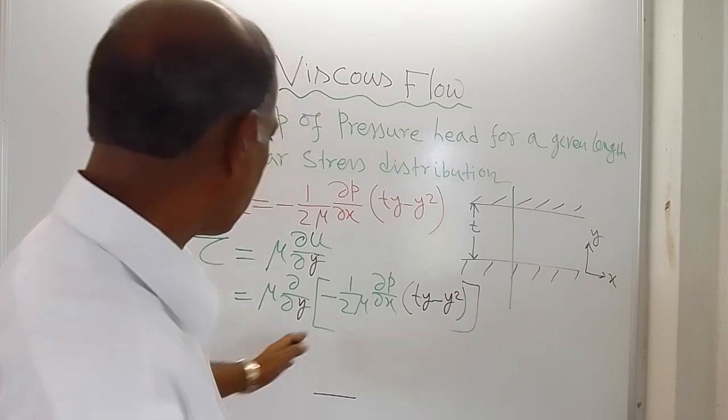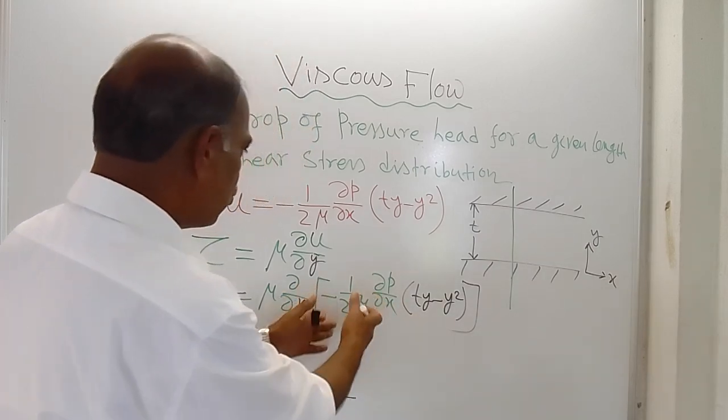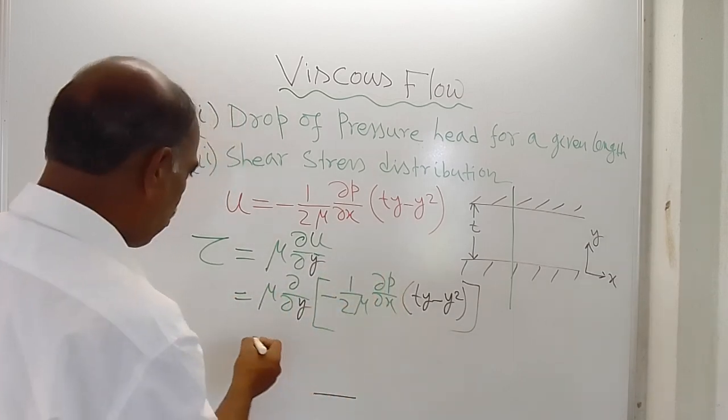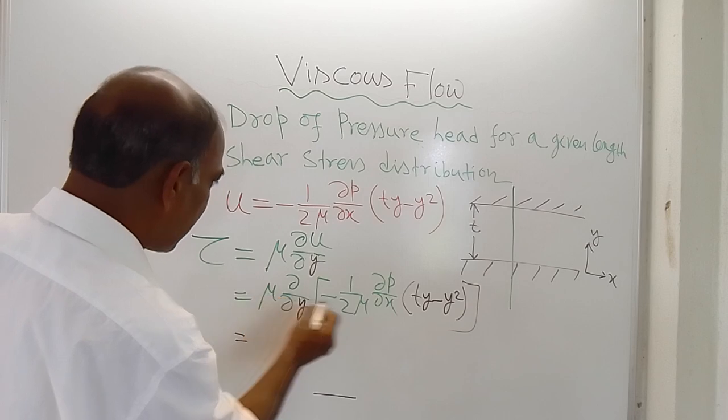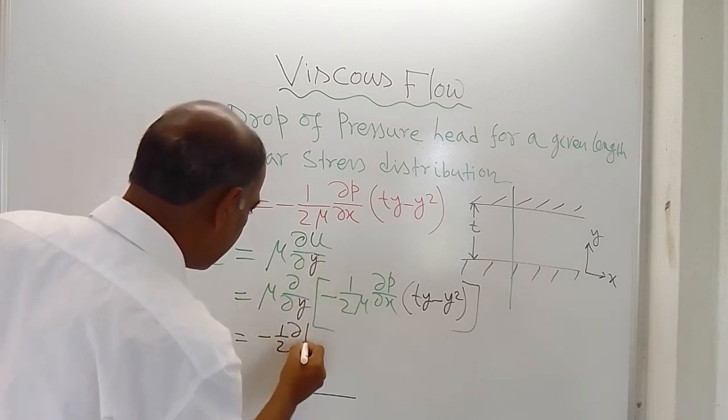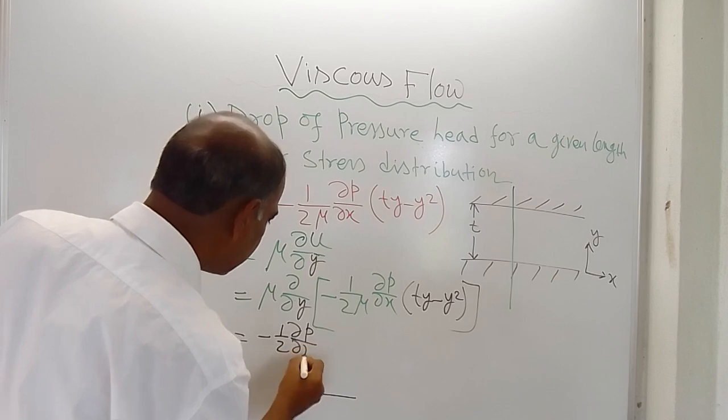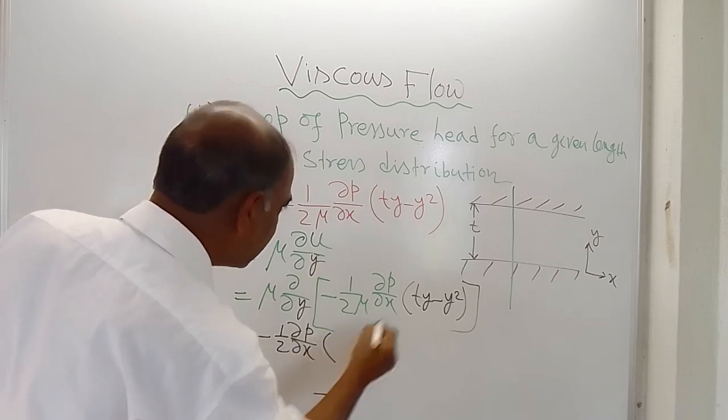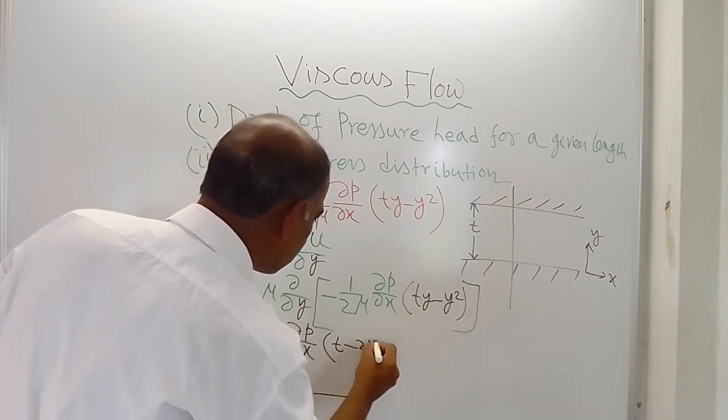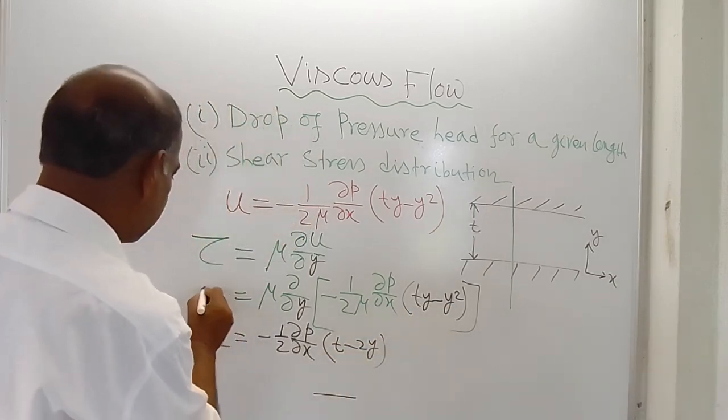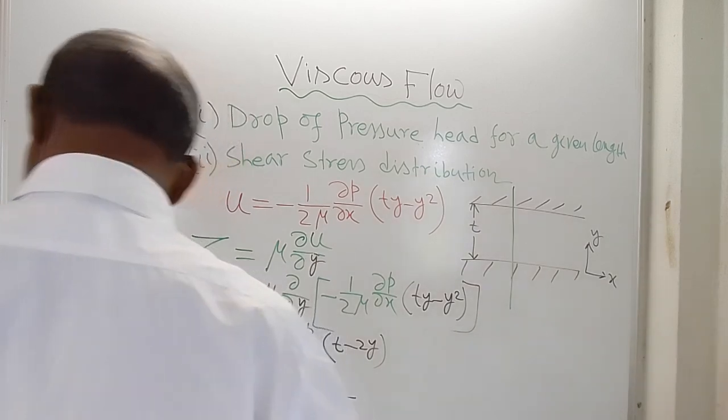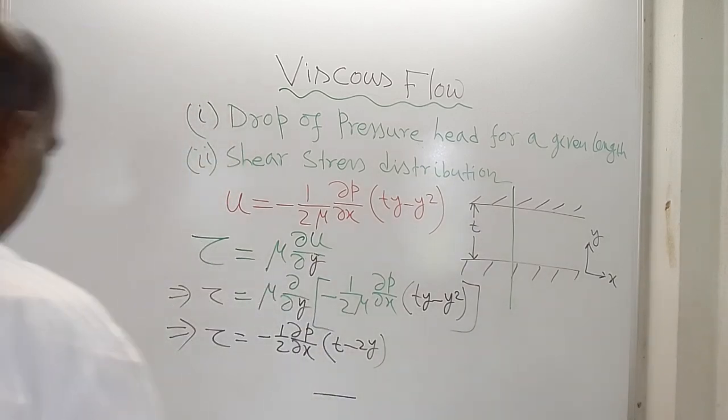This mu and del p del x are constants. This is a partial derivative. So what will be the result? This mu and this mu are cancelled, so minus half del p del x, and here you will get only t, and here you will get minus 2y. So this is the shear stress.